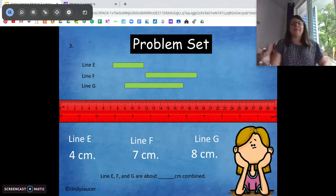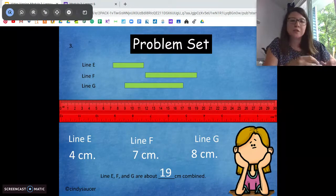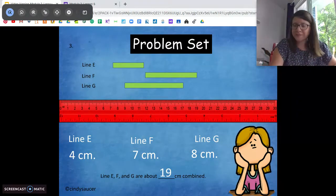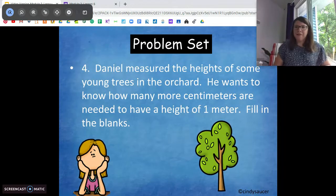All right, see what you got. Four plus seven plus eight is 19 centimeters. So all three lines combined are 19 centimeters. Awesome job. All right, word problem time. Here we go.